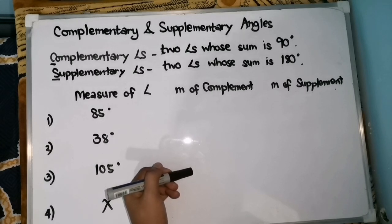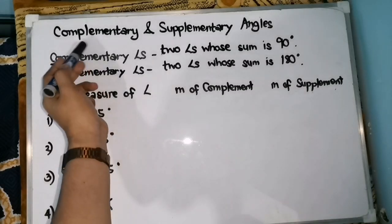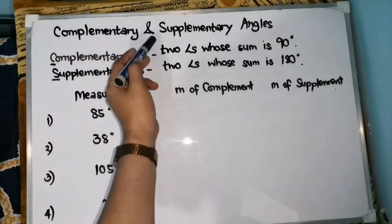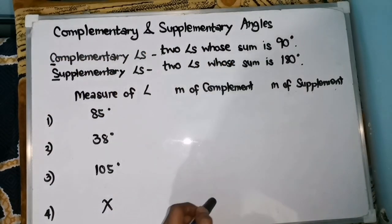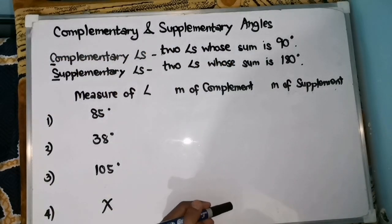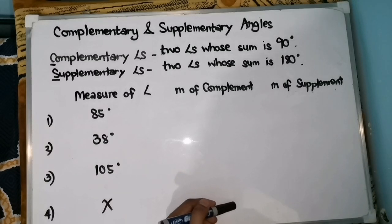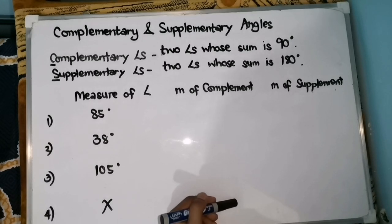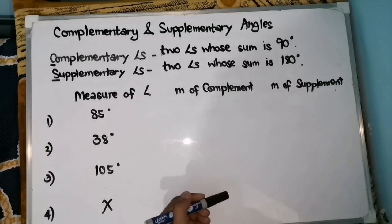For today's video, I will be discussing complementary and supplementary angles. These angles are special angle relationships. So, what is the difference between complementary angles and supplementary angles? Or, how are we going to get the measure of its complement and the measure of its supplement?